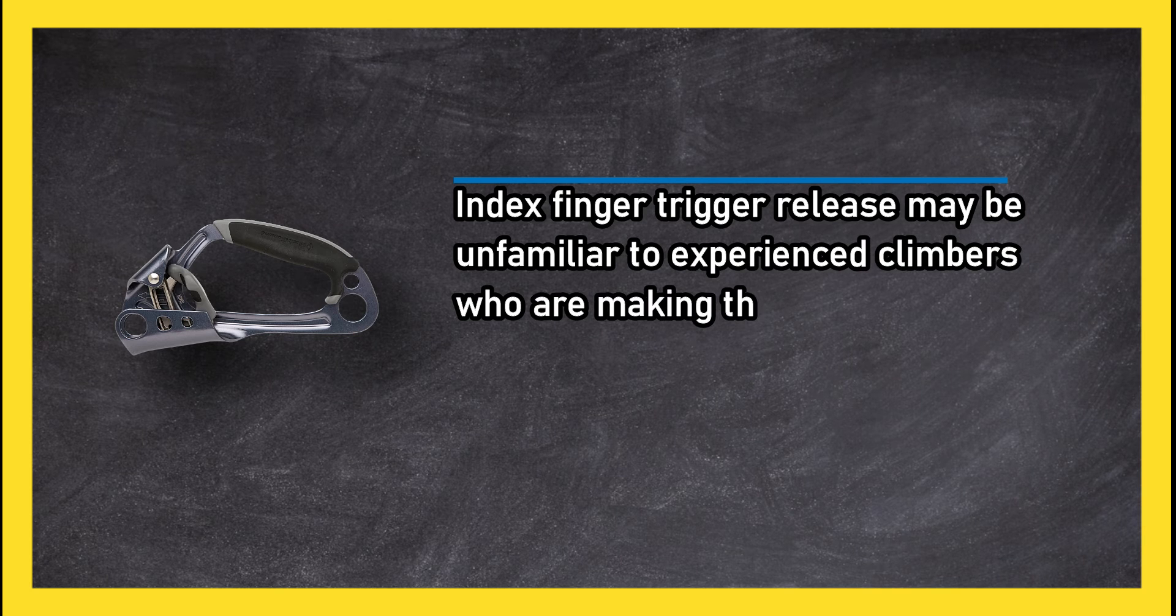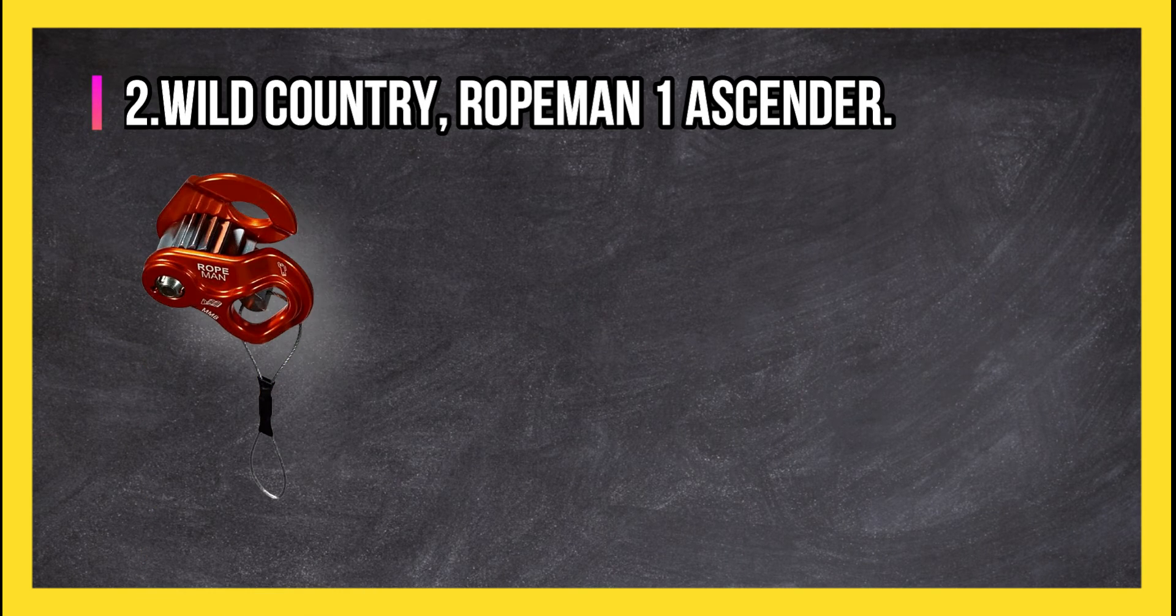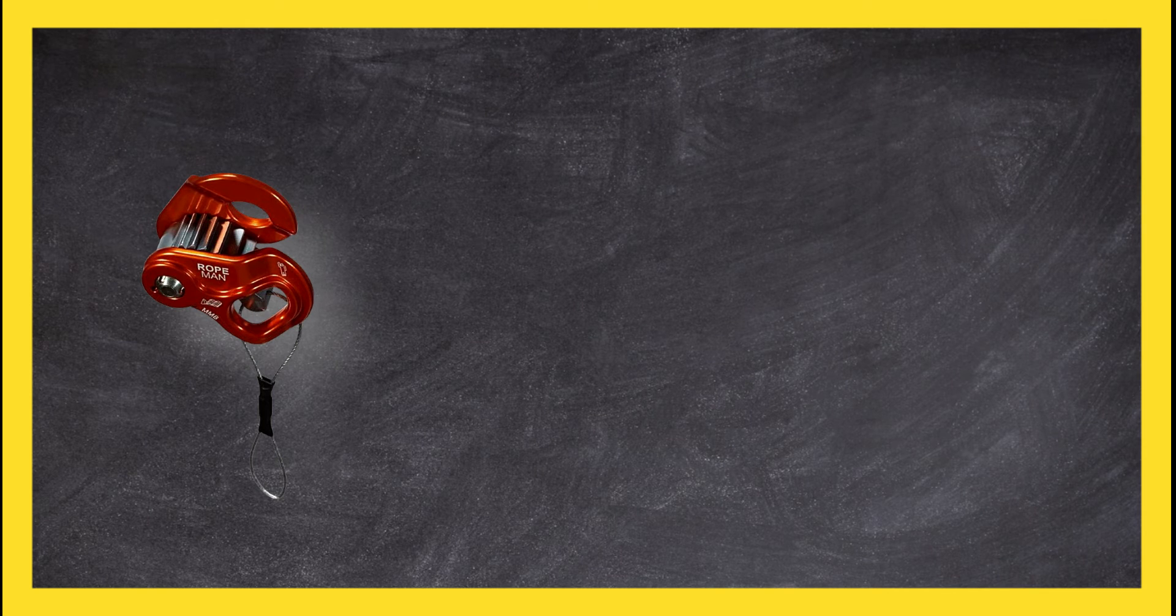At number two, Wild Country Rope Man One Ascender. Stainless steel axle and cable leash for increased strength. Alloy side plates for durability. Light and multifunctional.